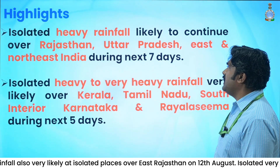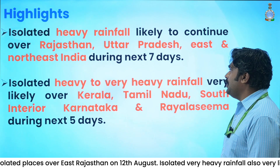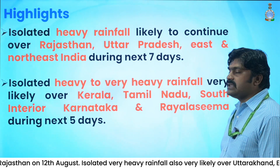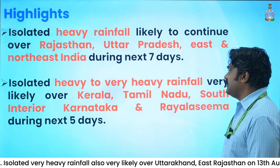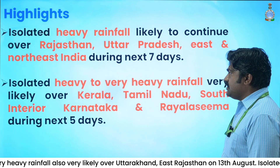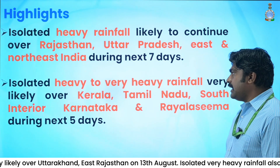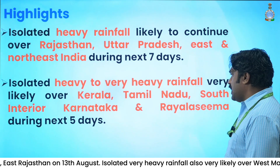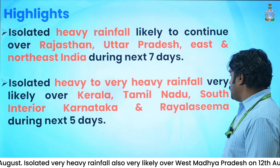Isolated heavy rainfall is likely to continue over Rajasthan, Uttar Pradesh, and east and north-northeast India during the next seven days. Isolated heavy to very heavy rainfall is very likely over Kerala, Tamil Nadu, south interior Karnataka, and also over Rayalaseema during the next five days.